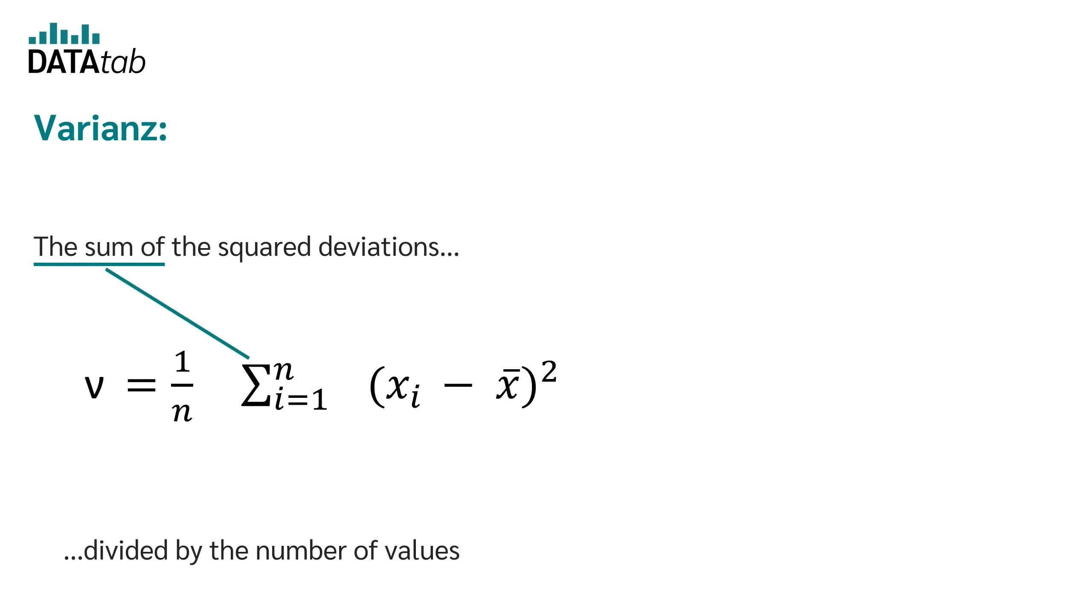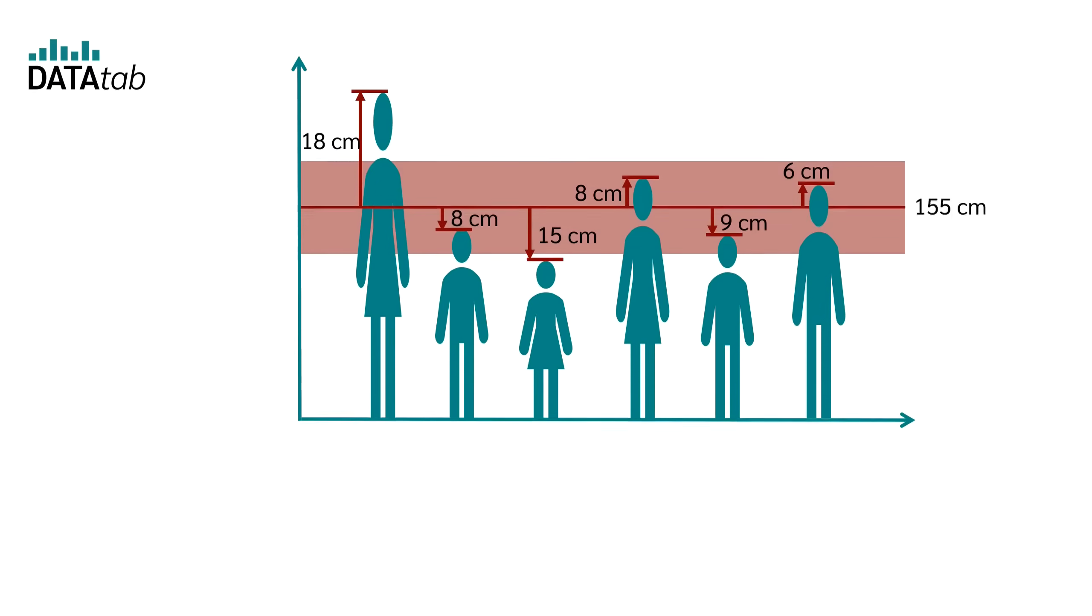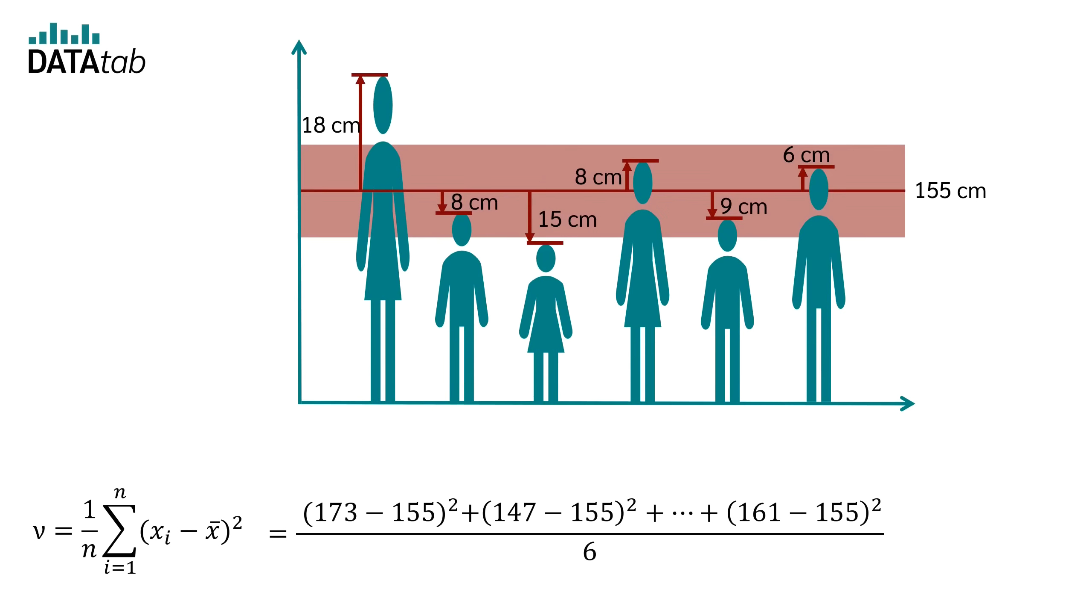So the variance is the sum of squared differences divided by the number of values. For example, this means that we calculate the size of the first person minus the mean and square it, the size of the second person minus the mean and square it, and so on until we arrive at the last person. We then divide this by the number of people, in our case 6. The result is then 132.33 centimeters squared.